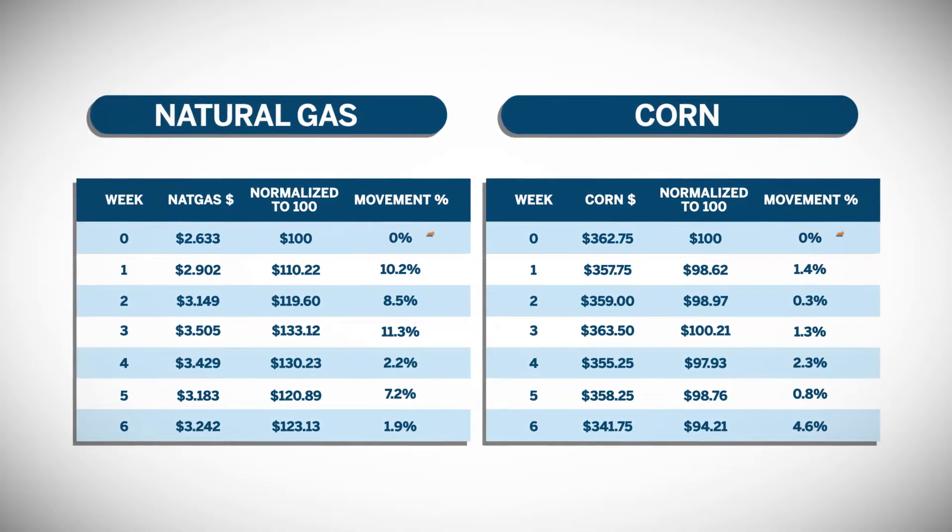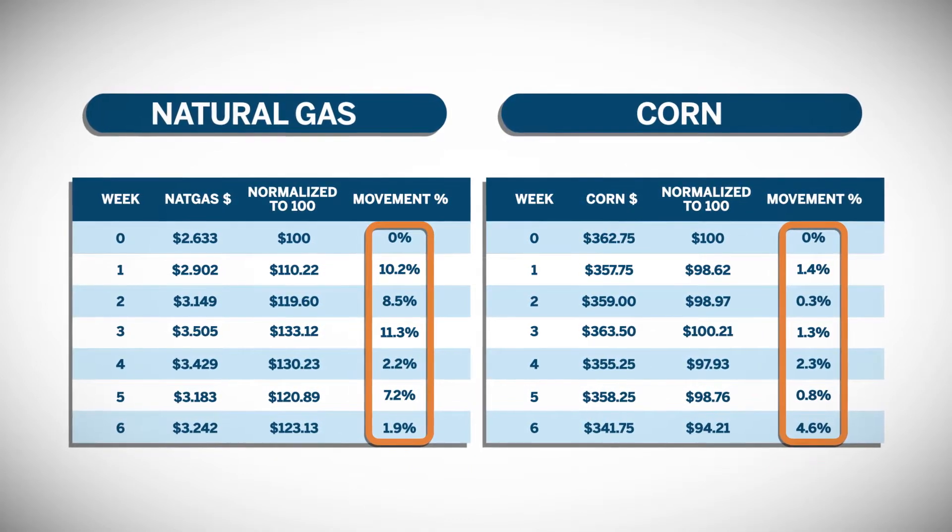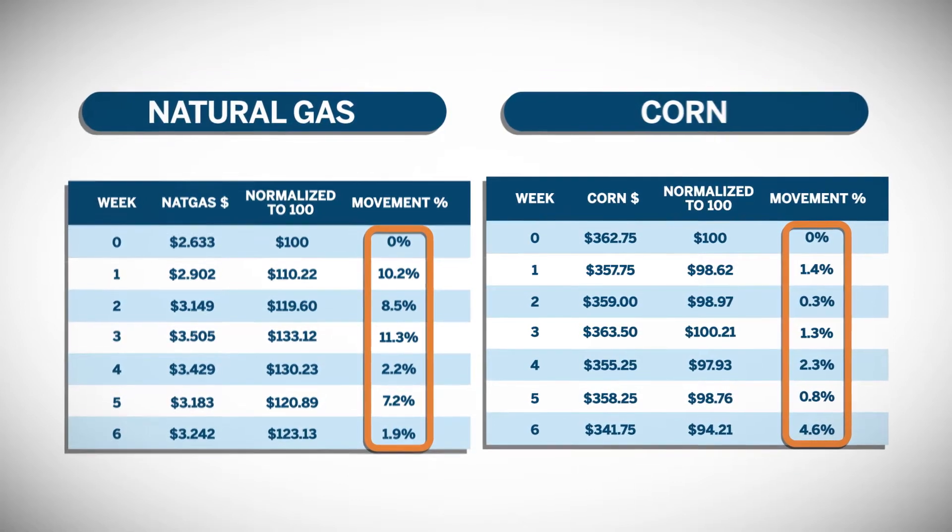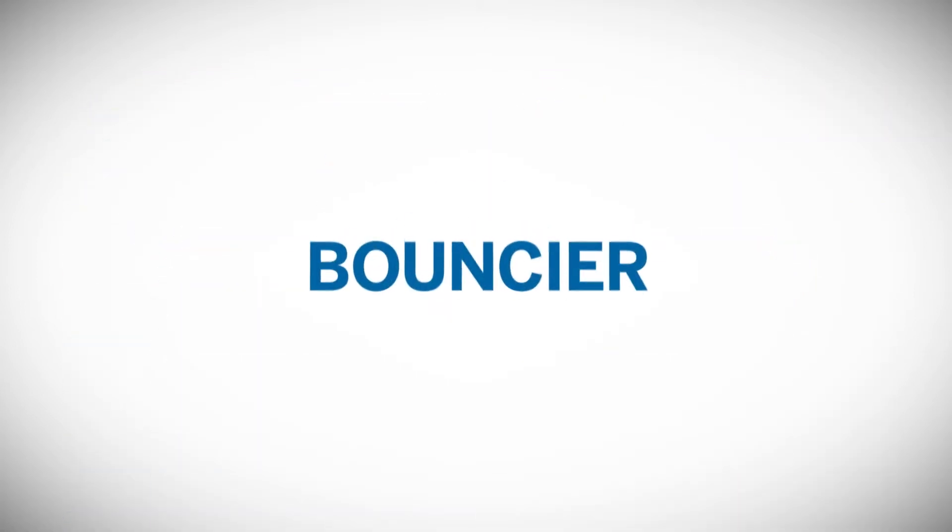we see the natural gas price change, whether up or down, is larger than the corn price change. Therefore, natural gas is bouncier than corn.